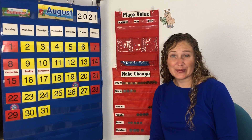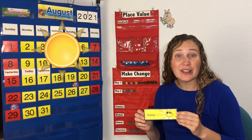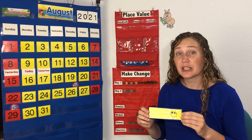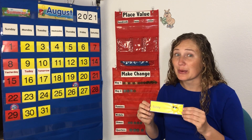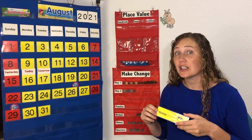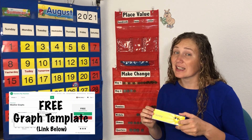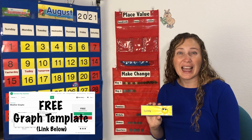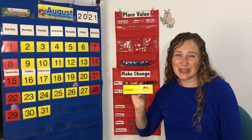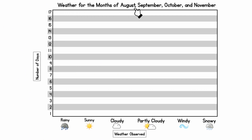What's the weather like where you are today? We're having a beautiful, sunny day. We're going to put sunny on a weather pictograph. A pictograph is a graph where you use pictures to represent an amount. If you'd like to make your own weather graph, go down to the description below, click on the link, and print out a weather graph of your own. My graph is titled 'Weather for the Months of August, September, October, and November.' We're going to keep track of the weather for calendar time on this pictograph for four months.